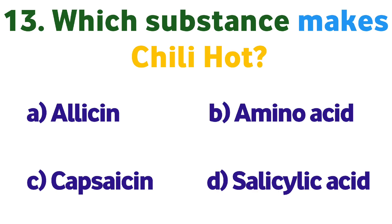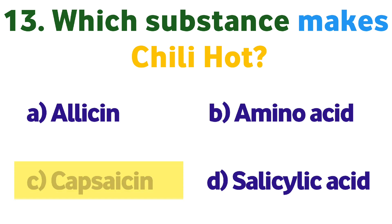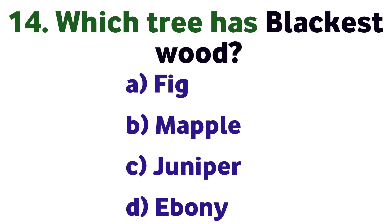Question number thirteen: Which substance makes chili hot? Option A: Allicin, B: Amino Acid, C: Capsaicin, D: Salicylic Acid. Correct answer is C: Capsaicin.